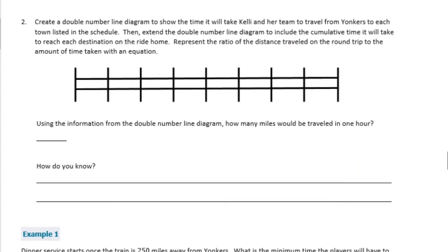Create a double number line diagram to show the time it will take Kelly and her team to travel from Yonkers to each town listed in the schedule. Then extend the double line diagram to include the cumulative time it will take to reach each destination on the ride home. Represent the ratio of the distance traveled on the round trip to the amount of time taken with an equation. So we're just going to take what we put in that graph above and put it on our double line graph.